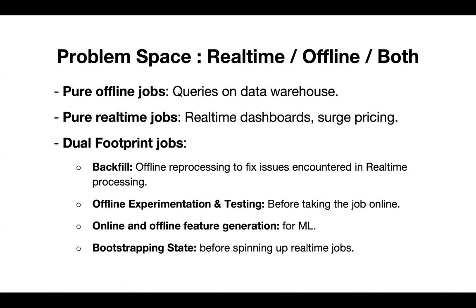The problem space in big data processing can be thought of as real-time jobs, offline jobs, or jobs which require a dual footprint. Pure offline jobs would be something like querying the data warehouse to see what happened over the last few months. Real-time dashboards, on the other hand, are always trying to tell you what's happening now — like surge pricing, where you only care about current demand and supply. Dual footprint jobs are quite interesting because they need a lifetime in both the offline world and the real-time world.